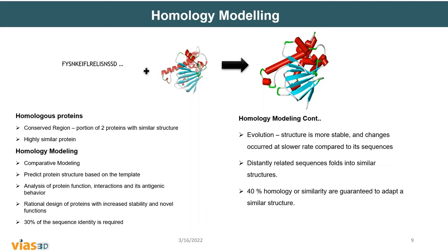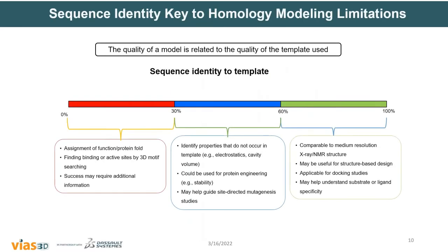Evolutionarily, structures are more stable and change at a slower rate compared to sequences. Distantly related sequences can fold into similar structures, and 40 percent homology or similarity guarantees a similar structure. If you find a template with more than 40 to 60 percent identity, your model will reliably reproduce most of the template structure, though a few residues may be missing. If no sequence similarity is found in any database, you must go for ab initio modeling.